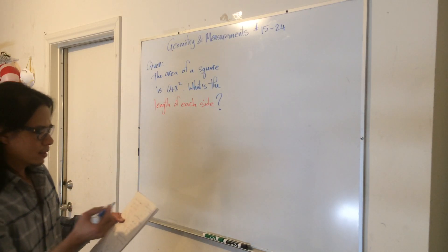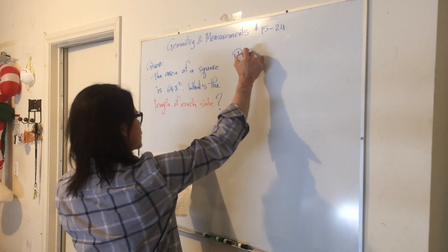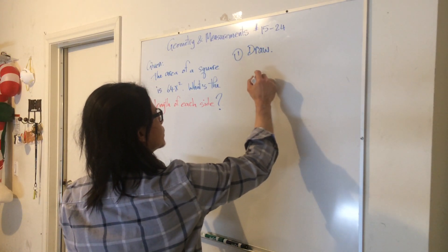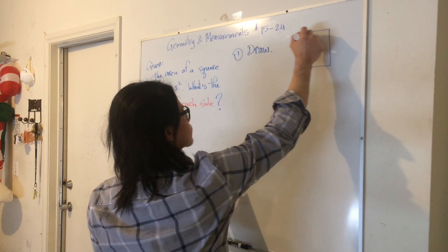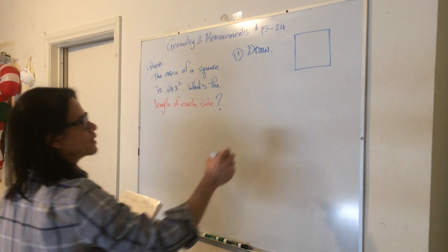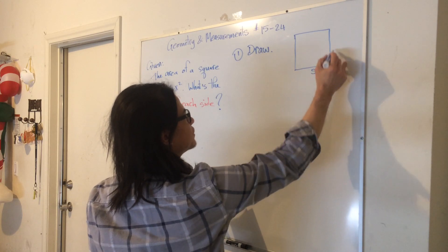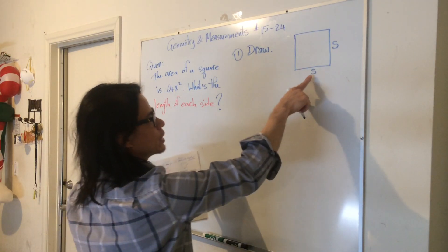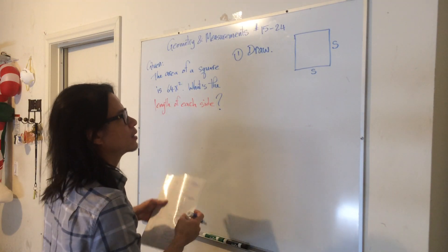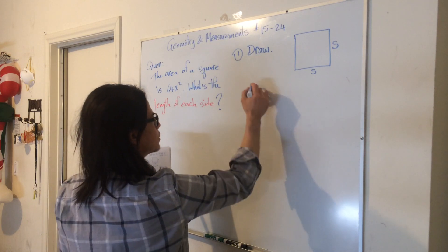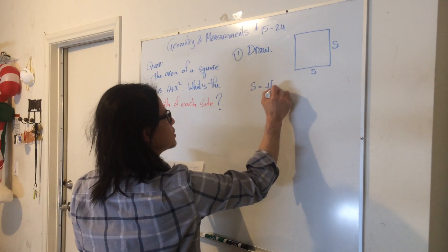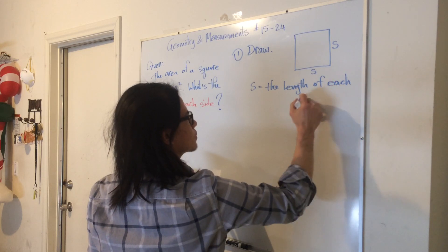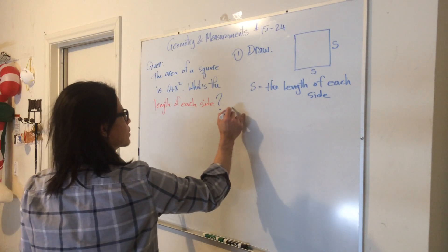This is a hard one, so the first step is to draw. We're going to have a square here. Since the question is asking what is the length of each side, I'll say let s be the length and the width — yes, the length and the width are the same — so we use the variable s to represent those two lengths. In other words, s is the length of each side of the square.